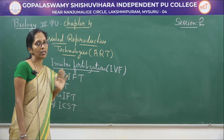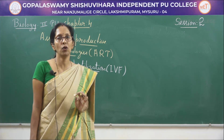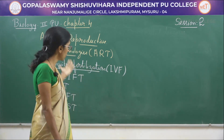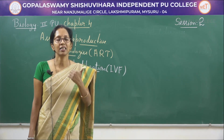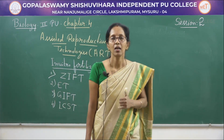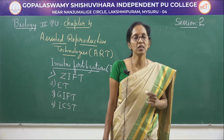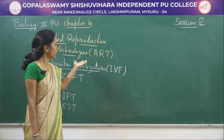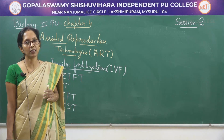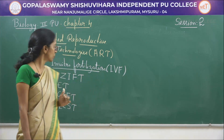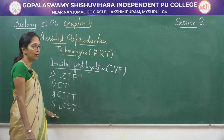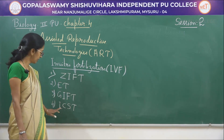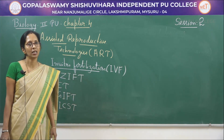This completes chapter 4. Topics covered: sexually transmitted diseases — their examples and causative organisms; infertility — inability to conceive a child — and its causes in both males and females; and assisted reproductive techniques, which include in vitro fertilization, zygote intrafallopian transfer, embryo transfer, gamete intrafallopian transfer, and intracytoplasmic sperm transfer, also known as artificial insemination.